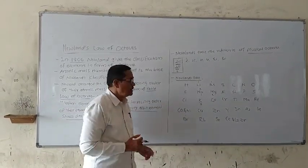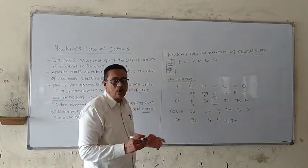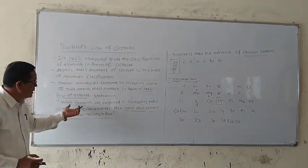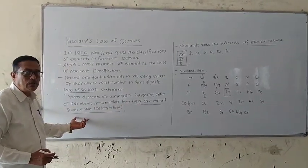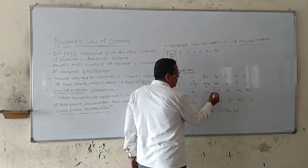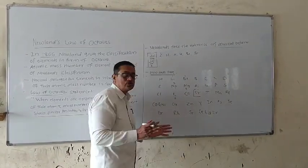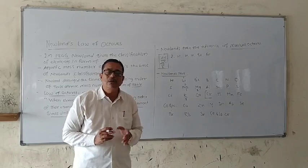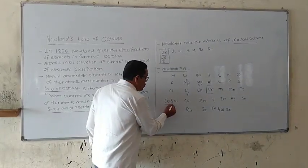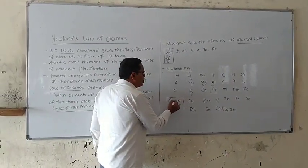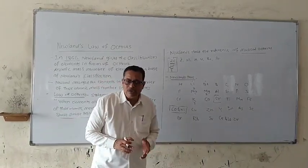However, Newland's classification has some drawbacks. Elements after calcium, such as chromium, do not obey the Law of Octaves. When elements are arranged in increasing order of atomic mass number, after calcium every eighth element does not show similar properties to the first. A second drawback is that Newland arranged two elements at the same position, which have different properties to that particular group.